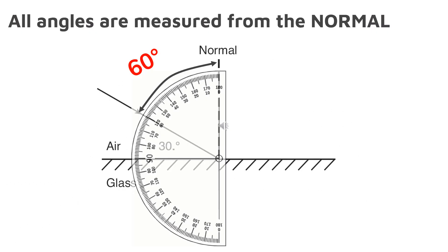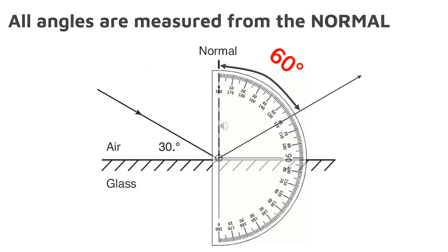Here is how you use your protractor to measure angles of incidence and angles of reflection. Place the zero line of your protractor on the normal and point the curve side of your protractor towards the angle you are measuring. Remember that we only use the angles on the protractor that are less than 90 degrees. In order to draw the reflecting angle, we need to point the curve of the protractor towards the reflected ray while placing the zero line on the normal.